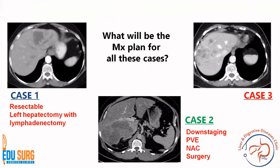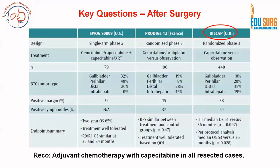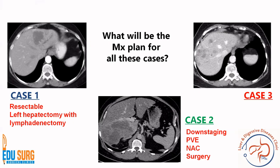Here are some cases showing different presentations of IHCC patients. Case 1 is a resectable case where a left hepatectomy with lymphadenectomy was performed. Case 2 needed downstaging: a right portal vein embolization was done, neoadjuvant chemotherapy was given, and then surgery was planned. Case 3 is not upfront resectable — it has lesions on both sides of the liver — and will need different management discussed in the next presentation.